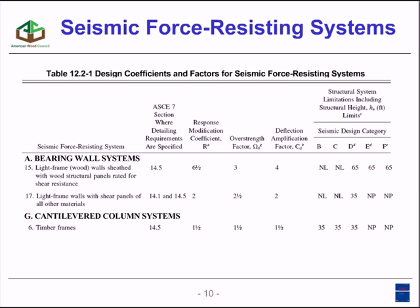This is Table 12.2-1 from ASCE 7. This is a very important table for seismic design of wood structures. Seismic design of wood structures in ASCE 7 is almost always by the equivalent lateral force method — ELF for short. In that methodology, you're required to have a defined seismic system with associated seismic coefficients. On this slide, I've extracted some of the wood systems that are available in Table 12.2-1.